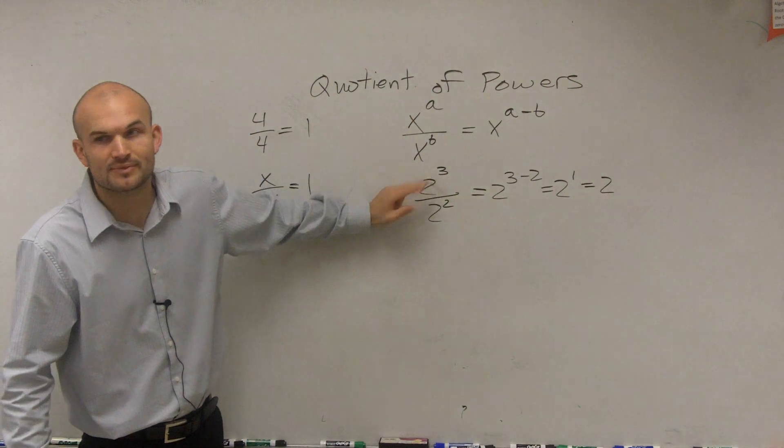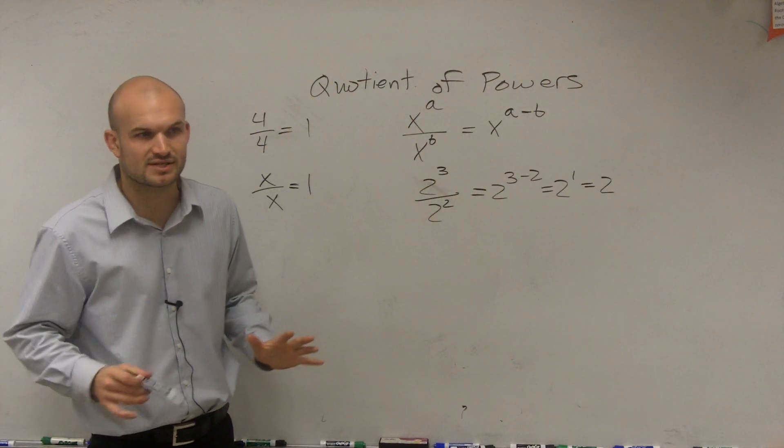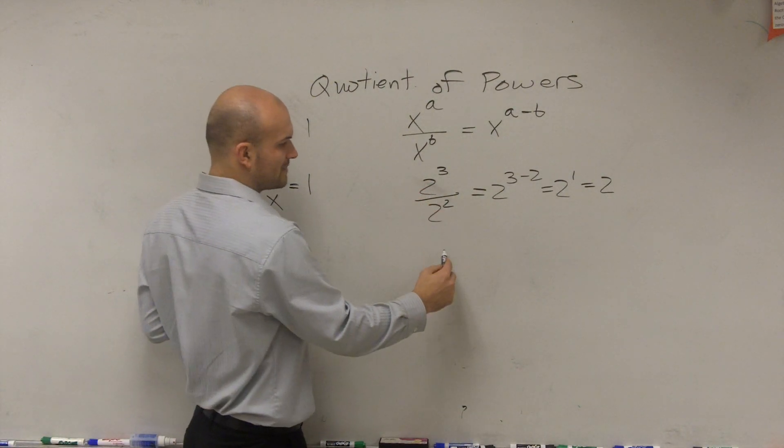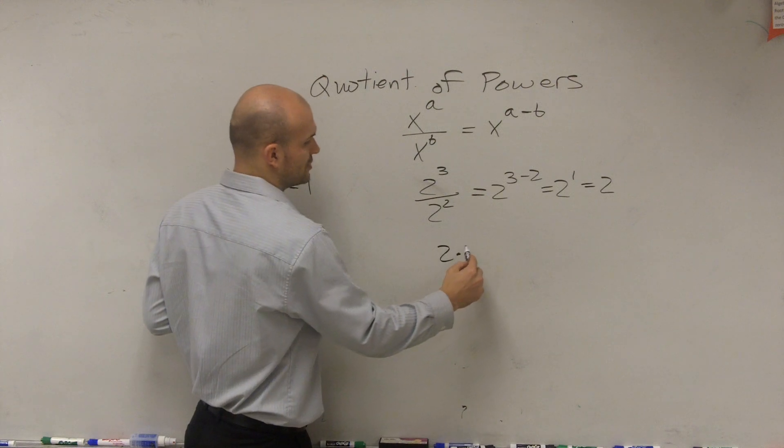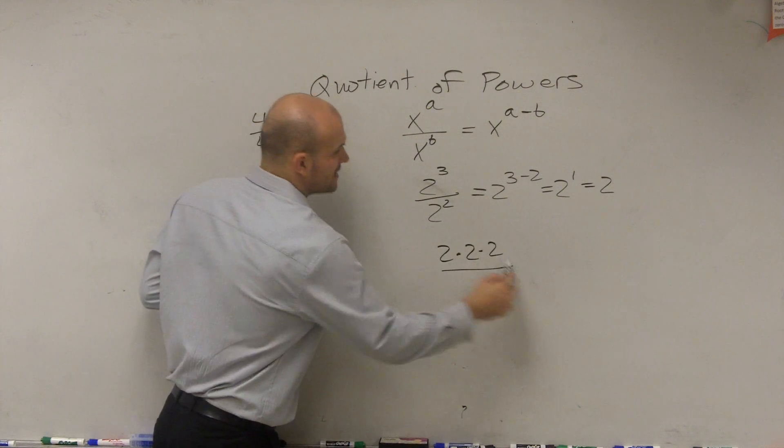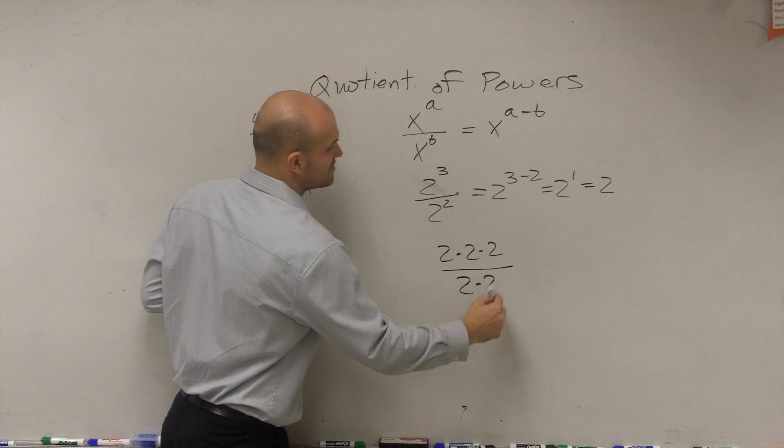Now, what does actually 2 cubed mean? So let me write this out. Maybe it might make a little sense for you. 2 cubed means what? 2 times 2 times 2 times 2. Right? And 2 squared means 2 times 2.